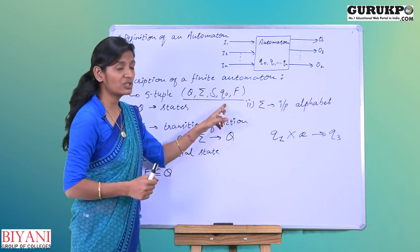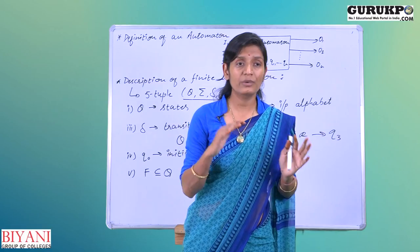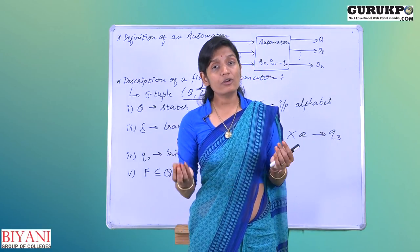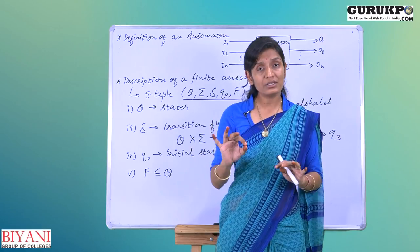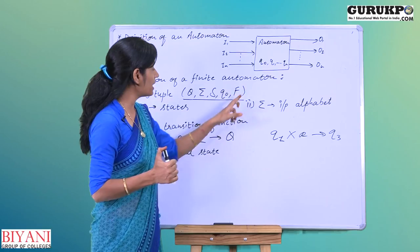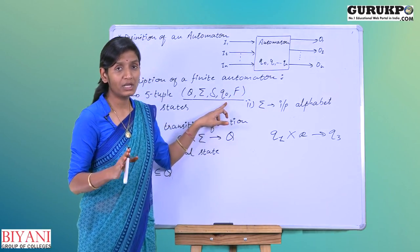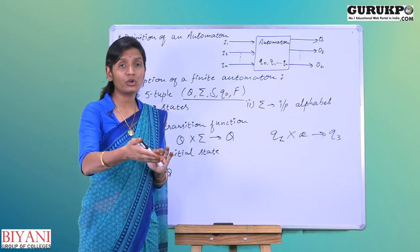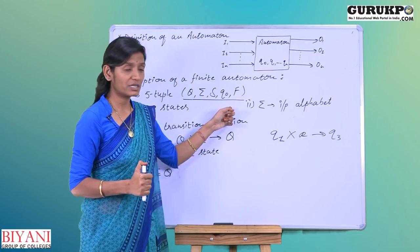Then next one is q0. When your automata starts, when our machine starts, what will be the initial state? In which state will it be first? That is known as the initial state and generally we represent the initial state by q0. When I first give input to the automata, in which state will it be? That is the initial state.